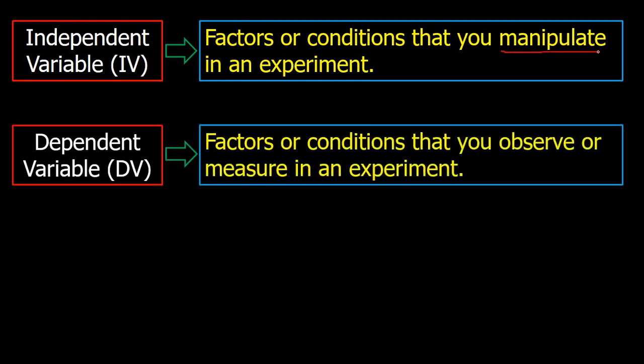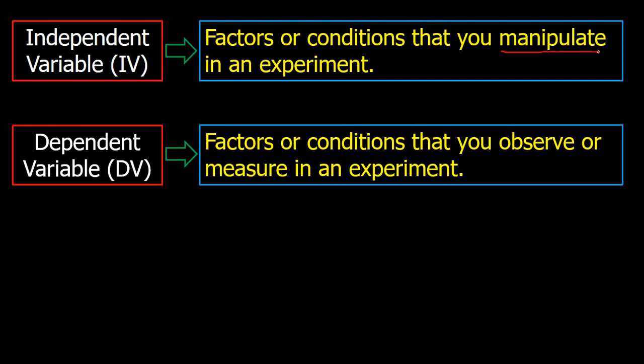Another is the dependent variable, or DV — factors or conditions that you observe or measure in an experiment. The key words here are measure and observe.